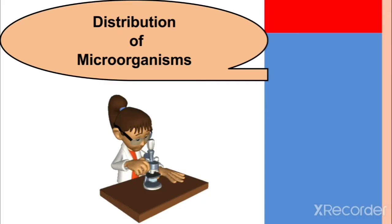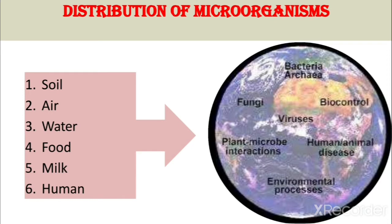In this video lecture we are going to understand the distribution of microorganisms. We know that microorganisms are ubiquitous in nature, so we can isolate them from anywhere or any source. Microorganisms are present everywhere in the world — in the soil, in the air, in the water, in food, milk, and also on the human body.